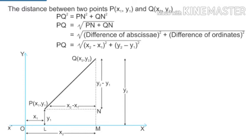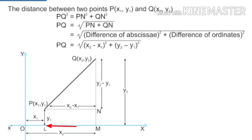First, let us find the distance PN. From O to M it is x2, and from O to L it is x1, so L to M is x2 - x1. Since LPMN looks like a rectangle, opposite sides are equal, so PN is also equal to x2 - x1.